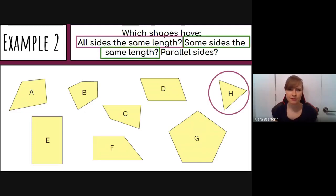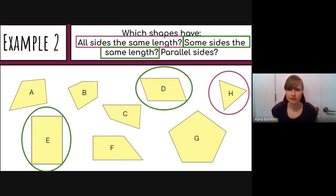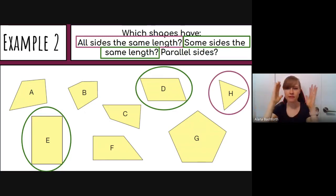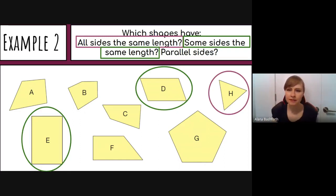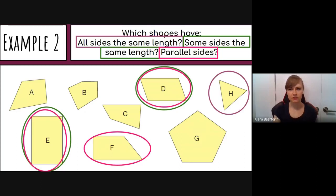For shapes with some sides the same length, shapes D and E qualify — D has two pairs of equal sides but not all equal, and E is similar. For parallel sides, shapes E and F have at least some: F has one set of parallel sides, while D and E each have two sets.